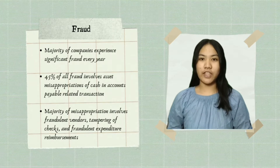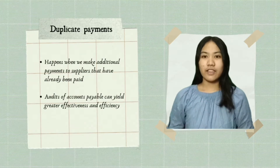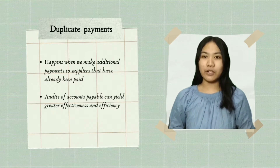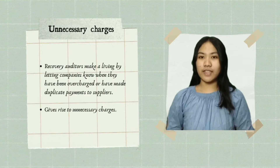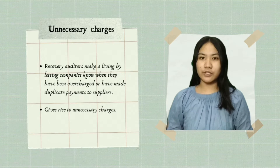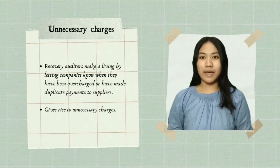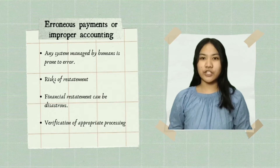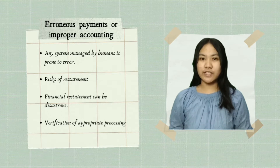If we audit accounts payable and eliminate fraud in that area, we could make a great difference. The second reason is duplicate payments — there are instances where an additional payment is made to a supplier that has already been paid. Audits can yield greater effectiveness and efficiency in controls and lessen duplicate payments. The third reason is unnecessary charges — recovery auditors make a living by letting companies know when they have been overcharged. The fourth reason is erroneous payments or improper accounting — any system managed by humans is prone to errors, and any restatement can lead to a reduced valuation of the company, which is especially disastrous in the capital marketplace.